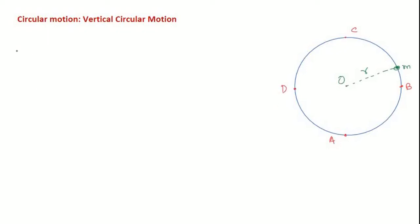The first important thing about vertical circular motion is that it has non-uniform acceleration. Because the velocity at different points changes, the acceleration is non-uniform. The velocity at points A, B, C, and D differs. At B and D the magnitude may be the same but the direction will be different.